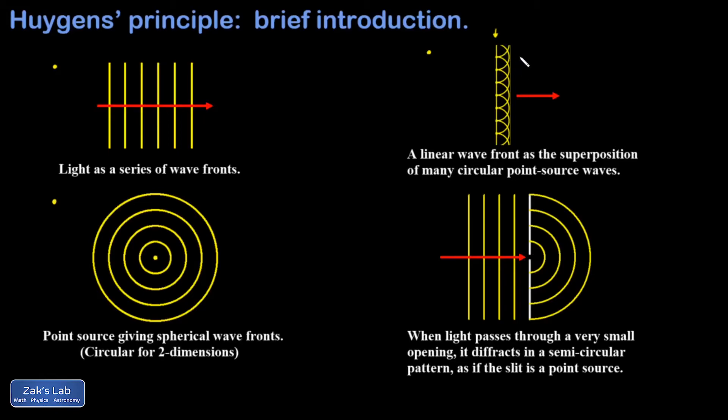Each one of those produces a circular wave front moving to the right. So I showed them as semi-circles. And a short time later, all of those expanding circles are lined up to create a nearly perfectly vertical line created by the superposition of all of those circular wave fronts.